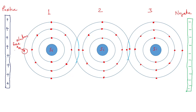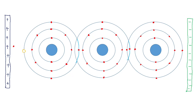This free electron is a negative charge particle and will be attracted by the positive plate of the electric field. When this free electron comes out, the place it occupied becomes a hole — a vacant place of an electron.